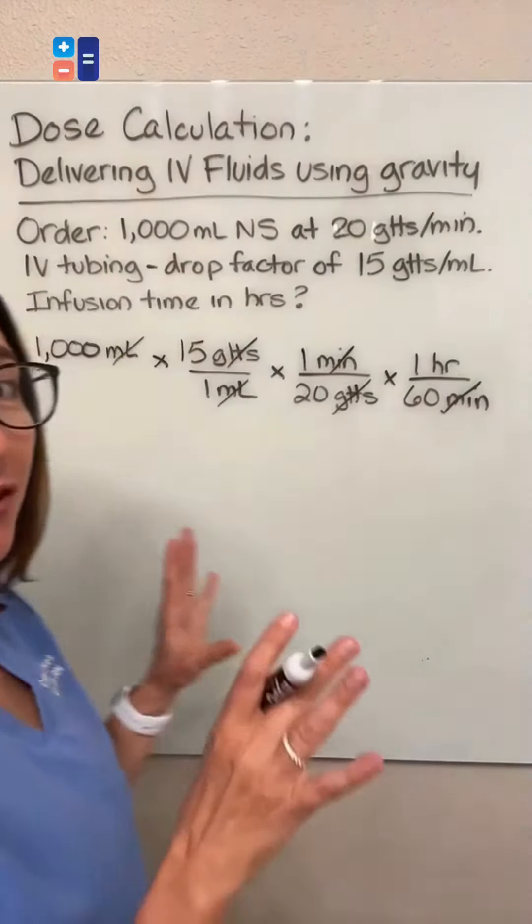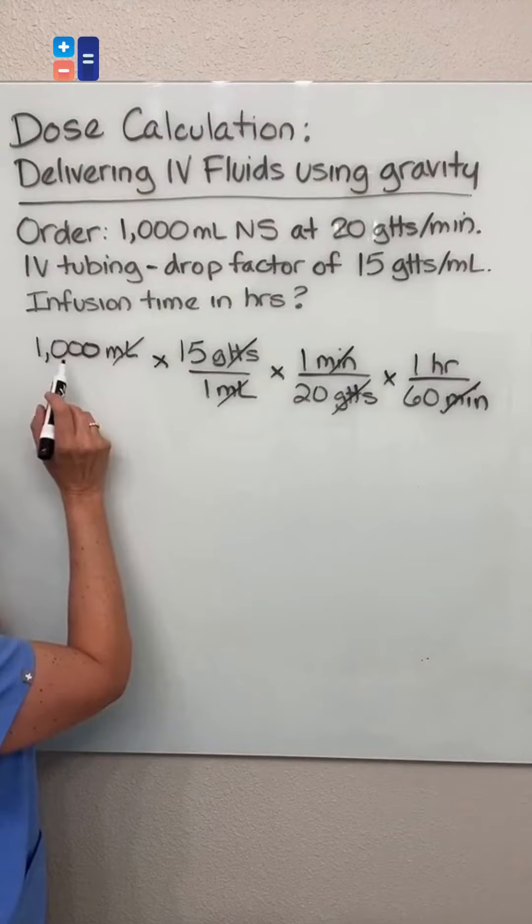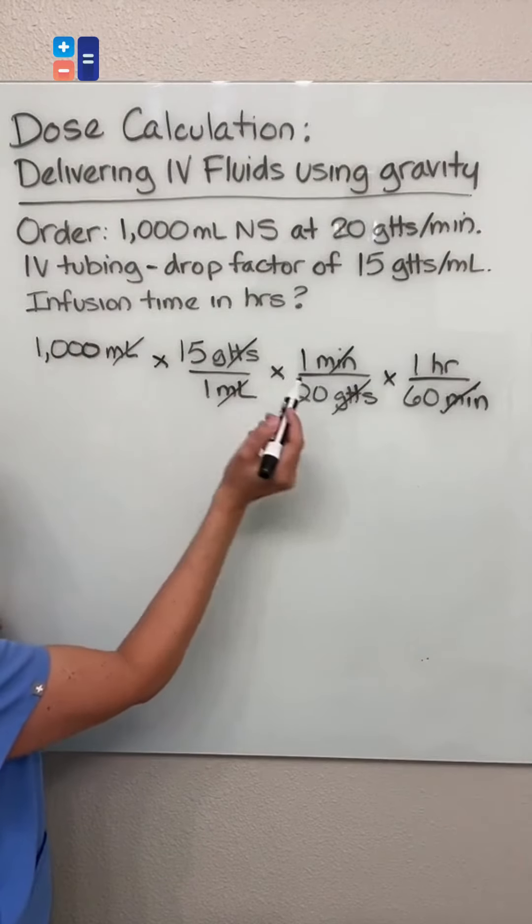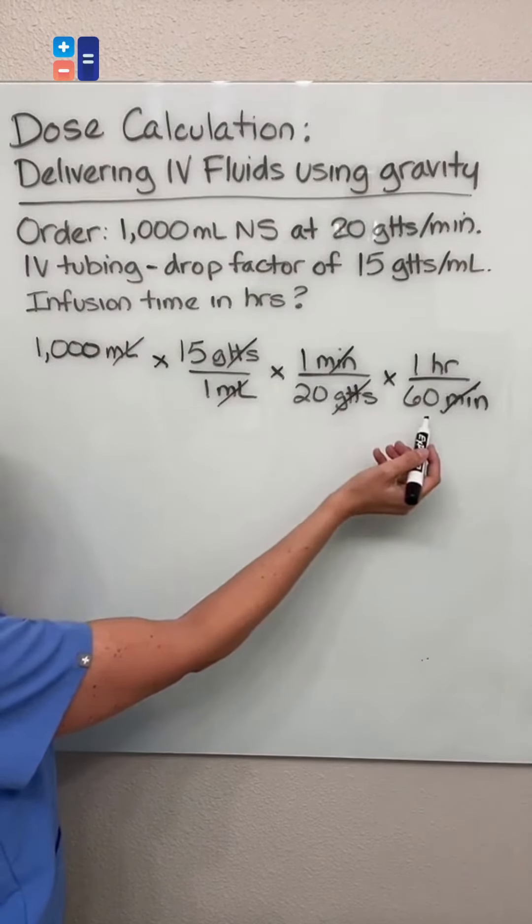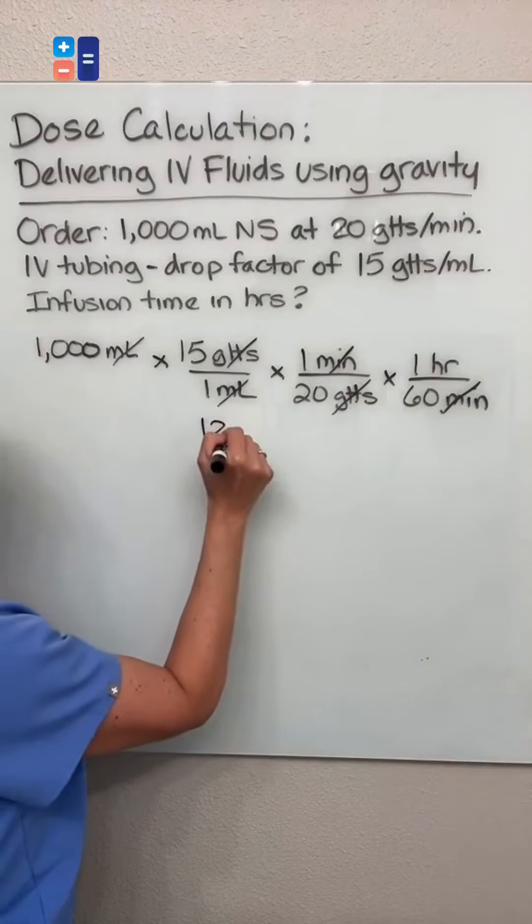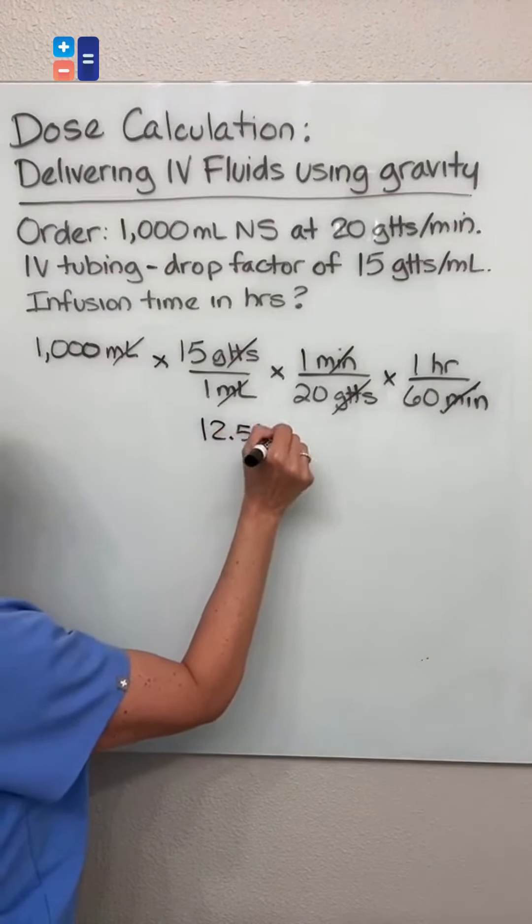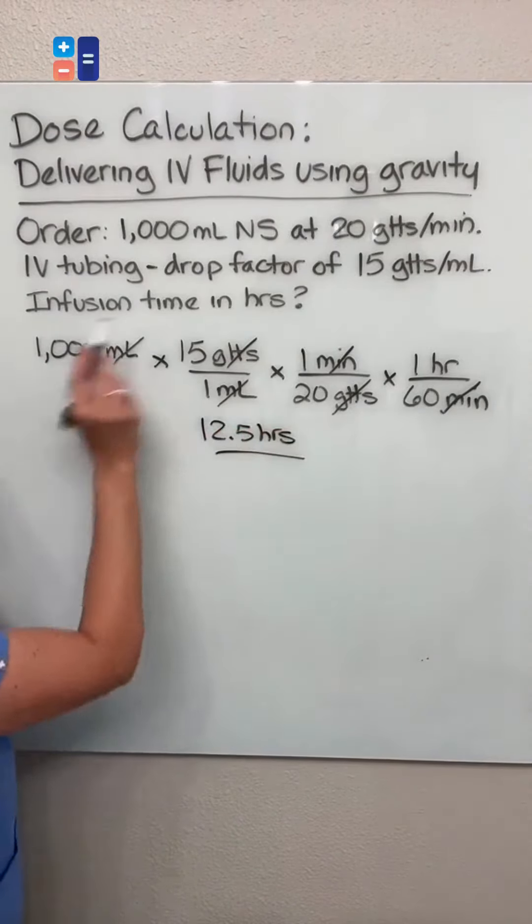So if you get your calculator out and multiply 1,000 by 15 and then divide by 20 and divide by 60, you end up with 12.5 hours. And that is the answer to this problem.